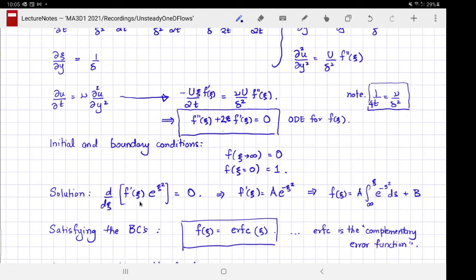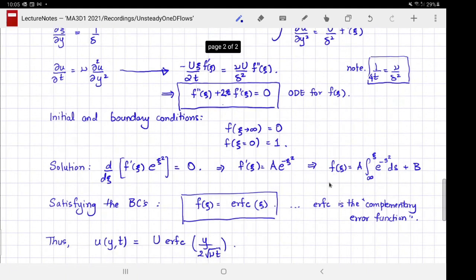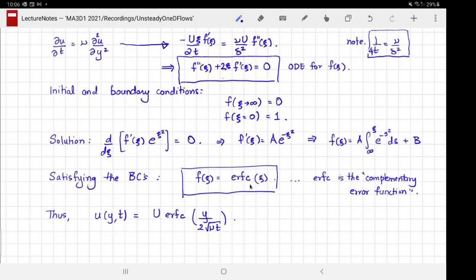You integrate once, you get f′ is some constant of integration times e^(-ξ²). You integrate again, you get another constant of integration and an explicit solution in terms of an integral. A little background in special functions reveals that this is nothing but the error function. If you substitute the boundary conditions, you'll find that the coefficients are such that the error function gets combined into the complementary error function. Our self-similar profile is then given in terms of this complementary error function. Substituting back into our flow profile u(y,t), we now have an explicit expression. That completes this section on unsteady one-dimensional flow.